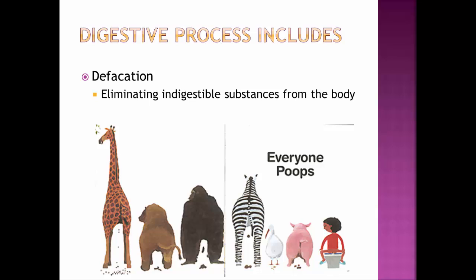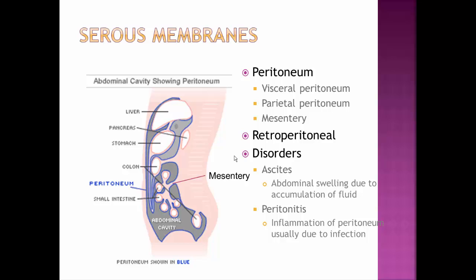The last step is eliminating food that we can't absorb or utilize — we have to defecate it, basically eliminating it from the body. Another part of the digestive system to look at is the coverings of the organs: the serous membranes. Serous membranes are mucus-producing membranes that help lubricate the organs in that cavity. We have them around the heart and lungs, and now we'll concentrate on the ones in the abdominal cavity.